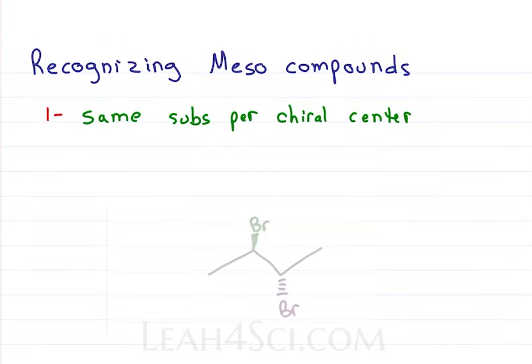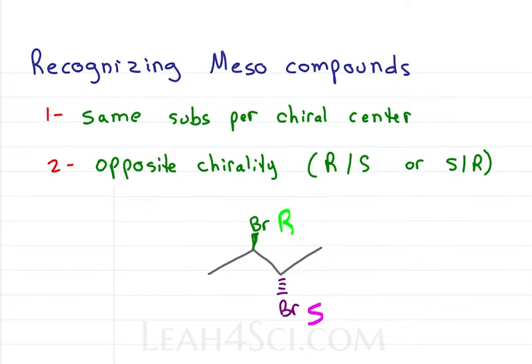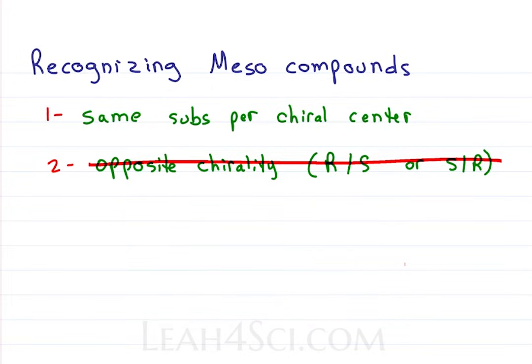How do you recognize the meso compound? One, the chiral molecule has the same exact substituents on each chiral center. And two, they have the opposite chirality. One is R, the other is S, or one is S and the other is R. But this is the long way. The faster way, which isn't always possible, is to look for that internal mirror.